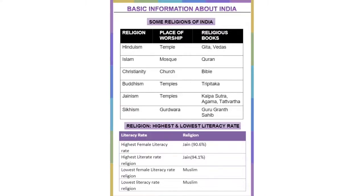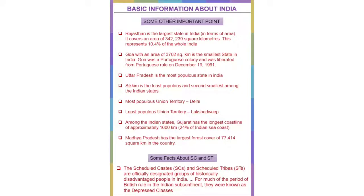Some important facts about India: Rajasthan is the largest state in terms of area, covering about 342,000 square kilometres, representing 10.4% of the whole of India. Goa, with an area of 3,702 square kilometres, is the smallest state, formerly a Portuguese colony liberated on December 19, 1961. Uttar Pradesh is the most populous state. Sikkim is the least populous and second smallest. The most populous union territory is Delhi, and the least populous is Lakshadweep. Gujarat has the largest coastline of approximately 1,600 kilometres, about 24% of the Indian sea coast. Madhya Pradesh has the largest forest cover of 77,414 square kilometres.